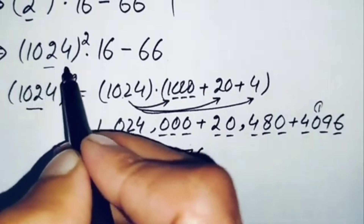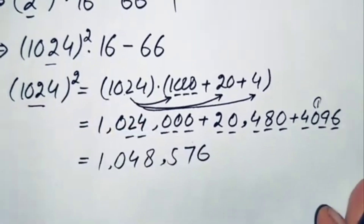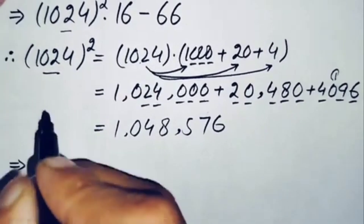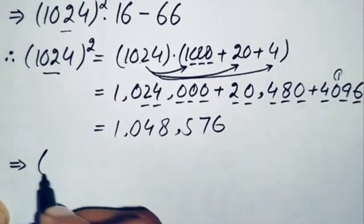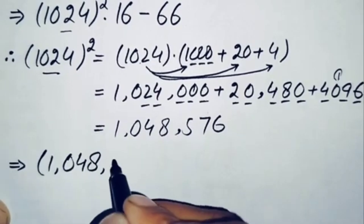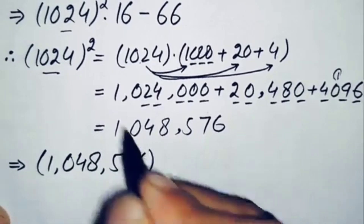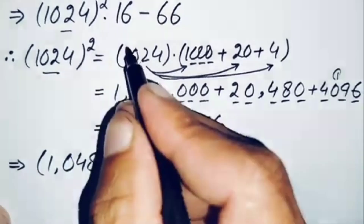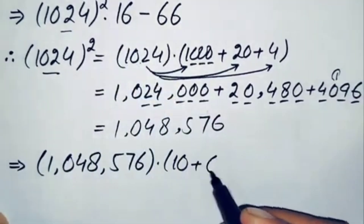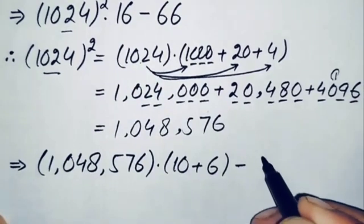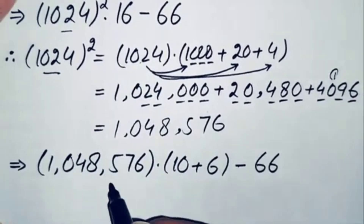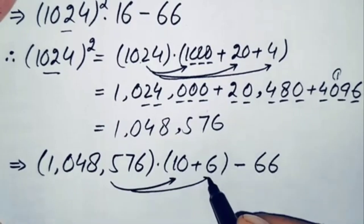So we replace 1024 squared with 1,048,576. This implies the expression becomes 1,048,576 times 16, minus 66. We can write 16 as the sum of 10 plus 6, and then multiply this bigger number first by 10 and then by 6.